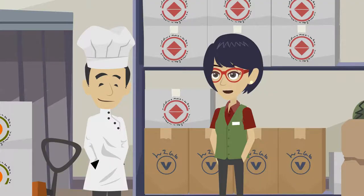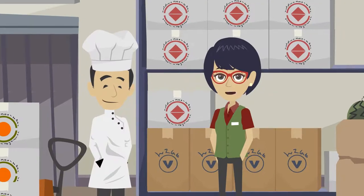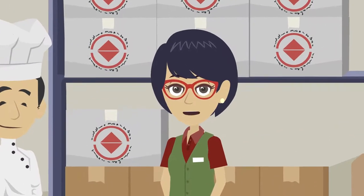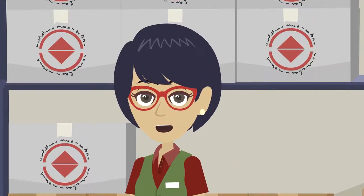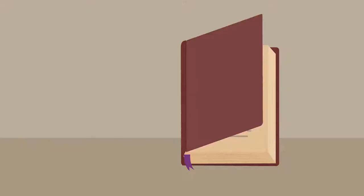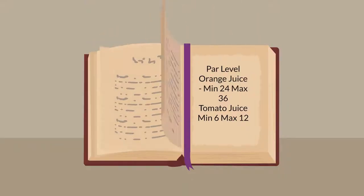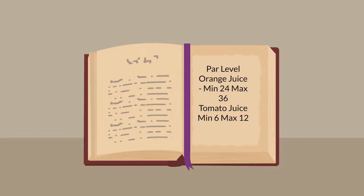To answer your question on how to reorder inventory, we first set the par level. The par level is the maximum quantity of materials we will keep in store. We will set the maximum and the minimum reorder level — like 24 of the juice packet, etc.